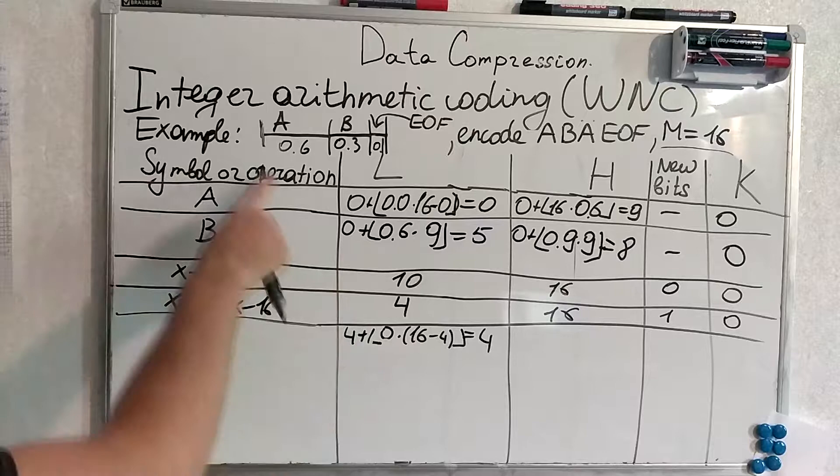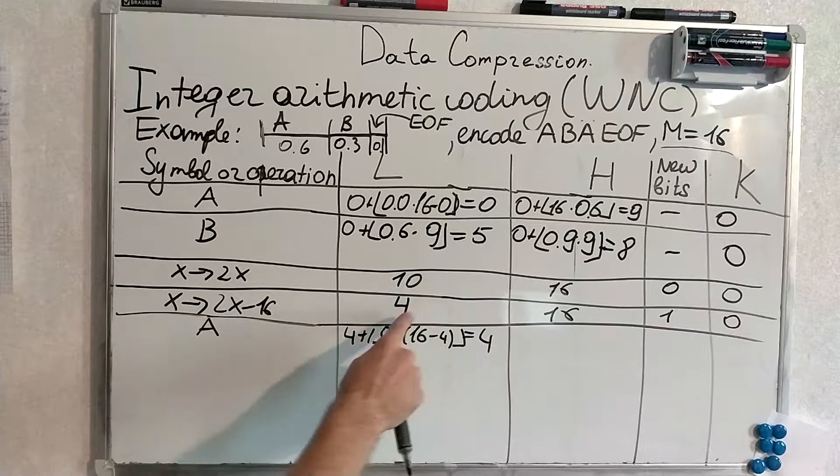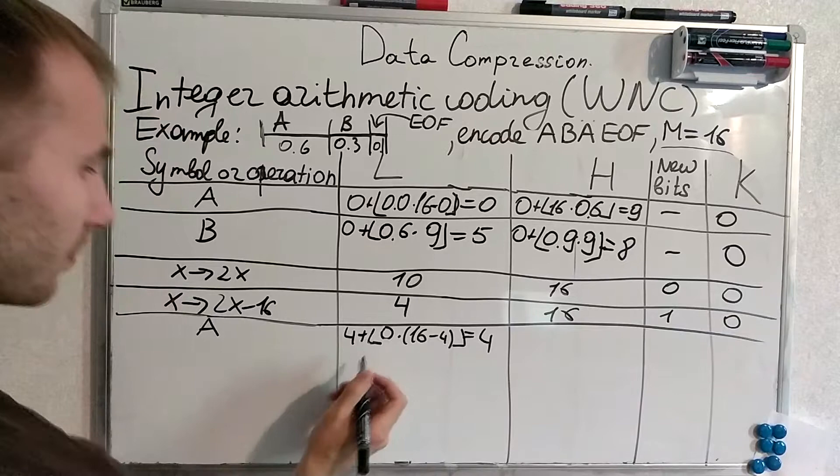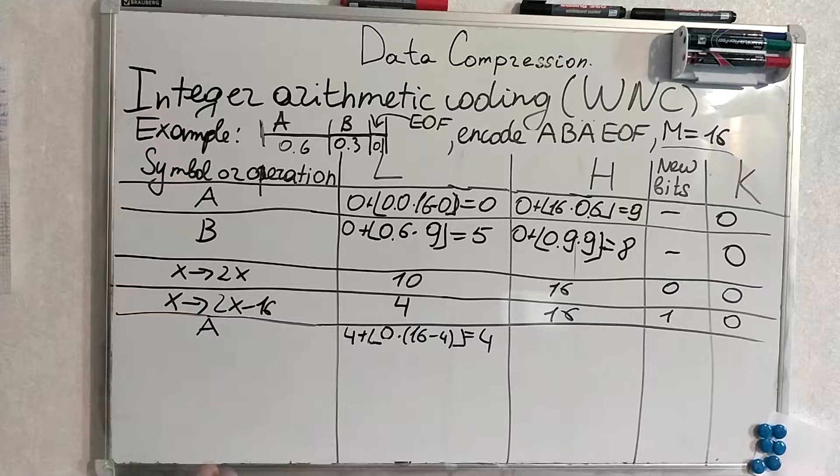Multiplied by higher bound minus lower bound. This is 4. Actually, you don't have to even understand what's happening here. You just have to follow the formulas. And that's it. Plug in the numbers, follow the formulas. Nothing more than that.